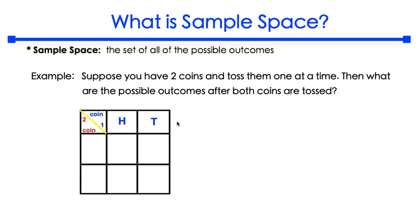So H stands for heads and T stands for tails. Now when you go ahead and flip coin two, don't you think you have the same outcome? You will either have heads or tails when you toss coin number two. So when we take a look at both of these two coins being tossed, we want to look at the outcome of what will appear.